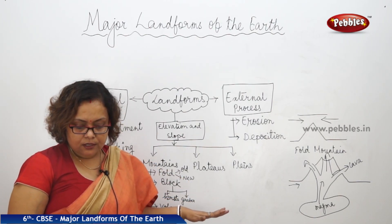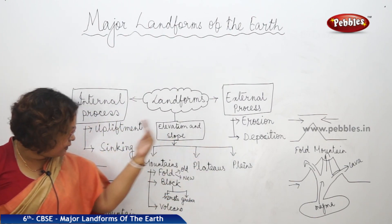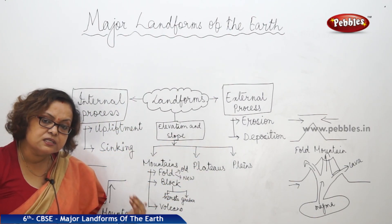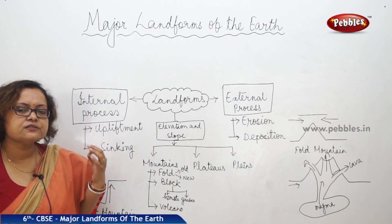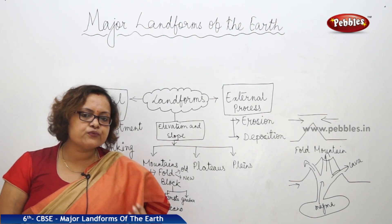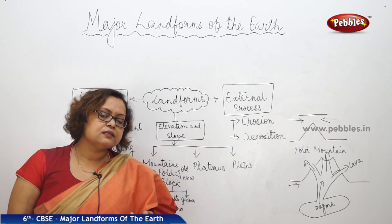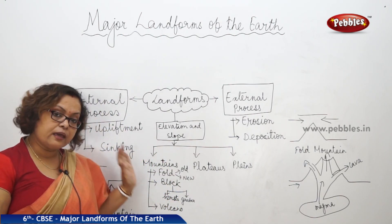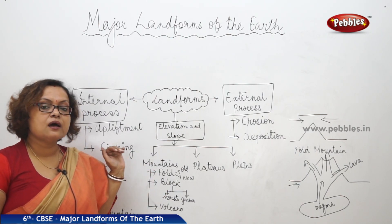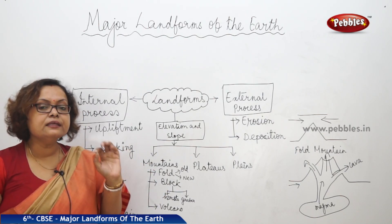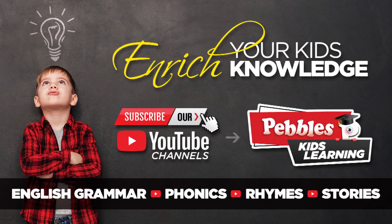Most river valleys and plains are thickly populated. In contrast, mountains are thinly populated because basic necessities are tough to get there — transport facilities are poor and climatic conditions are harsh. That is all for this chapter, thank you.